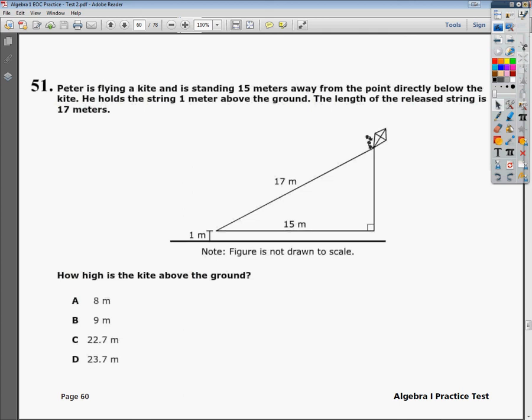Welcome. This is the Tennessee Algebra 1 End of Course Practice Test 2, question number 51. The question says, Peter is flying a kite and is standing 15 meters away from the point directly below the kite. He holds the string 1 meter above the ground. The length of the release string is 17 meters. How high is the kite above the ground?